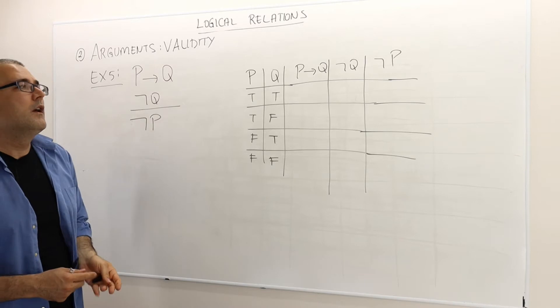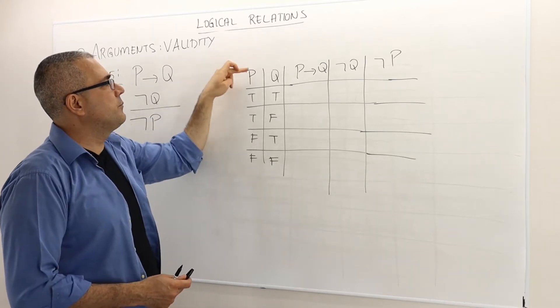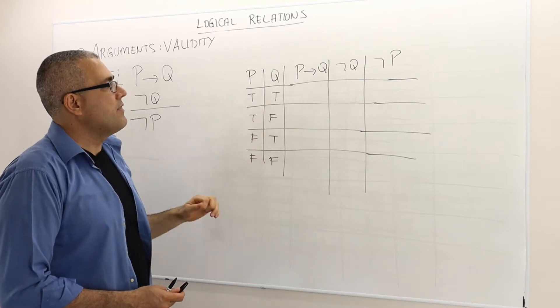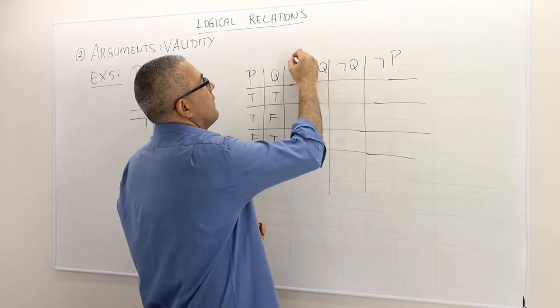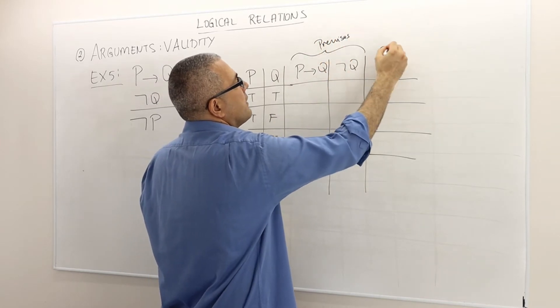Is this a valid argument? So, once again, the truth table. I have two atomic sentences, P and Q. I already wrote down the truth values. And then I have two premises and then the conclusion.